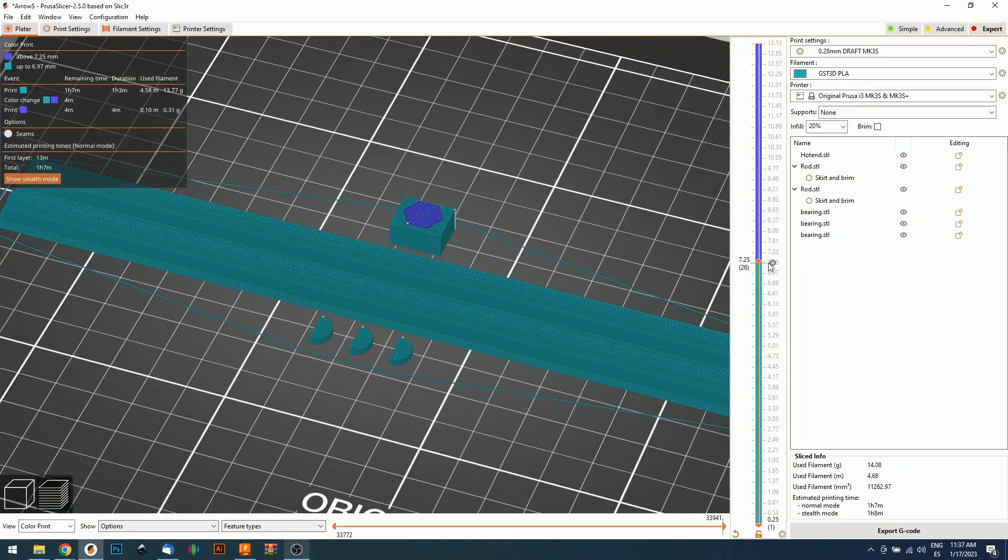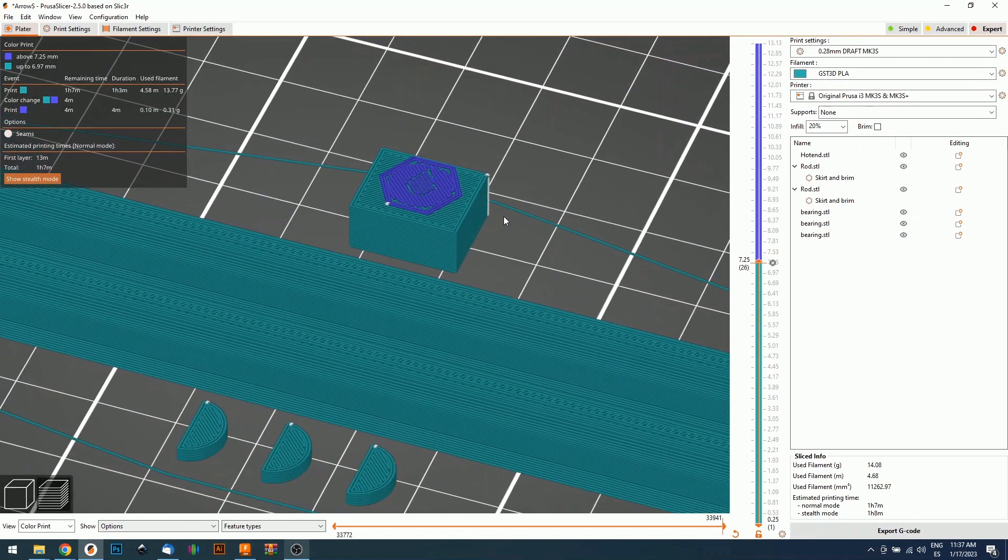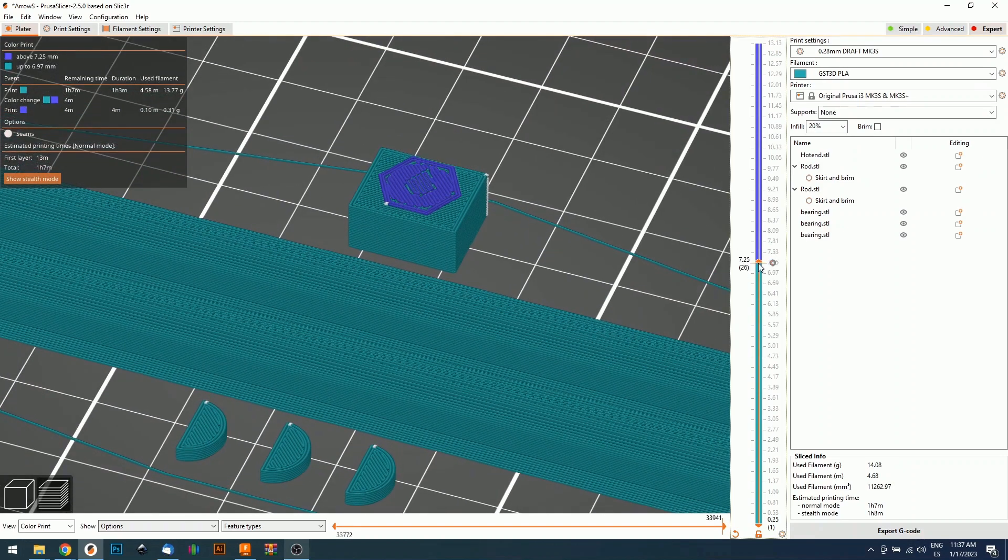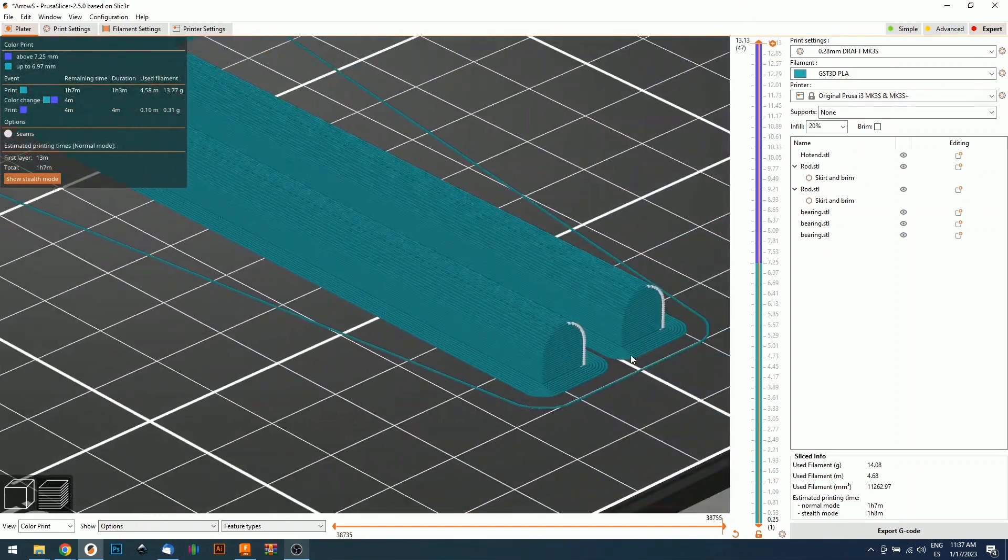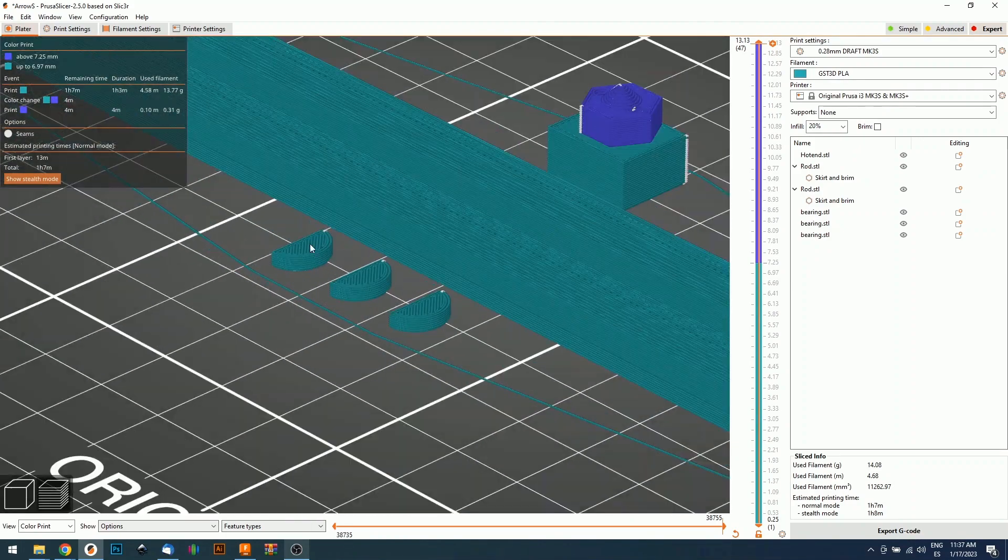If we slice it, you will see that I added a color change right here. This is because I want my Hutton to be silver and gold. I also added a brim to the rods so they stick to the build plate.